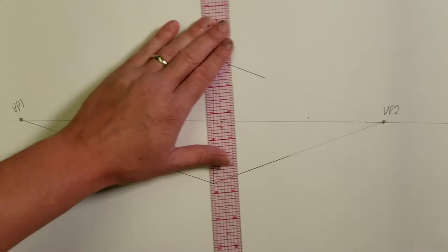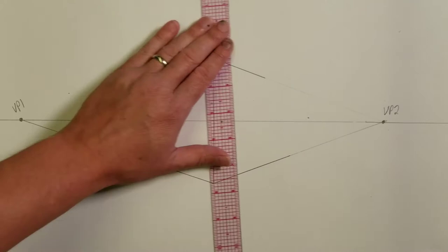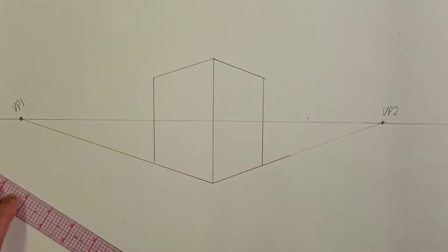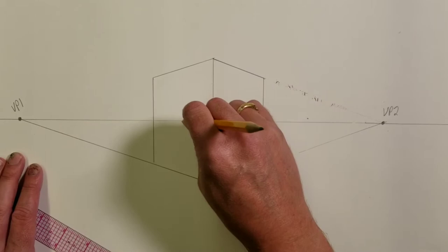It's parallel with this one and it will be parallel with this vertical over here because that follows our second rule. All verticals are parallel. Alright, and we just do some simple erasing and we've got our first cubic structure that is in two-point perspective.